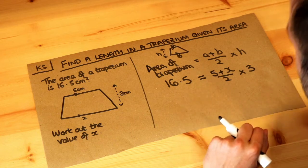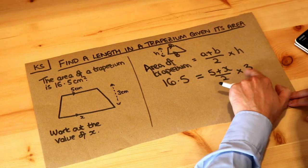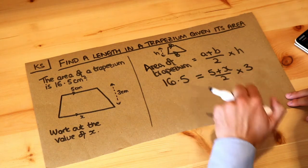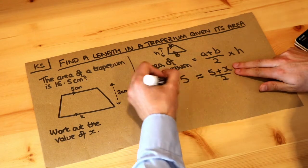And then we just need to work backwards to work out what x is. Well, 5 plus x divided by 2 times by 3 is 16.5. If we work backwards and divide both sides by 3 to get rid of that times by 3.